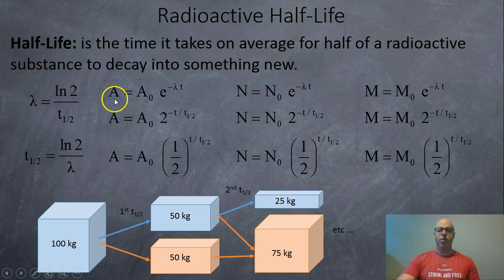Now when you solve these problems you may be asked to solve for activity, so that could be like A for activity. So the activity you have now is your original activity A zero times e to the power of negative lambda t, where lambda is your decay constant.